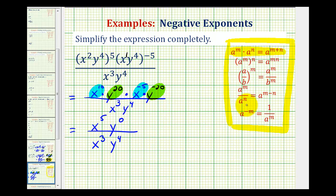One rule I see that's missing over here is that a to the power of zero is always going to be equal to one. So y to the power of zero simplifies to one. So we're left with x to the fifth over x to the third, y to the fourth.